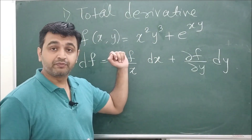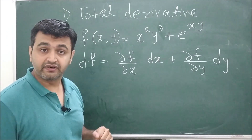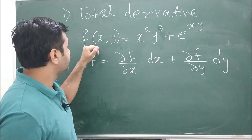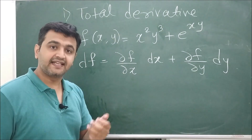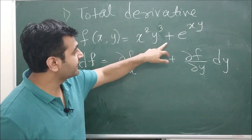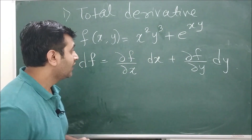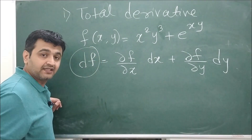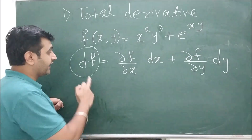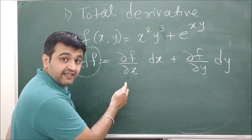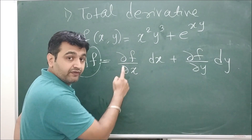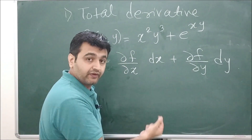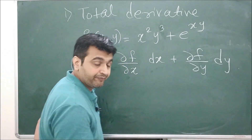Let's see the first topic: total derivative. Suppose you have a function in two variables, say f is a function of x and y, for example f = x²y³ + e^(xy). The total derivative of f is denoted by df and is defined as the partial derivative of f with respect to x times dx, plus the partial derivative of f with respect to y times dy.